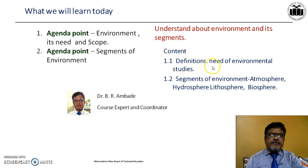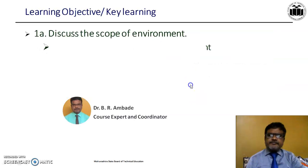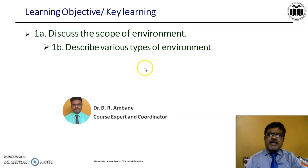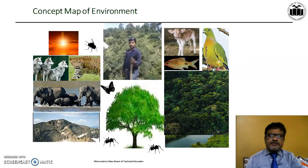The contents are Definitions, Need of Environmental Studies, and Segments of Environment. The learning objectives are: 1A — discuss the scope of environment; 1B — describe various types of environment; and 1C — describe the importance of environmental studies. This is a concept map of environment.